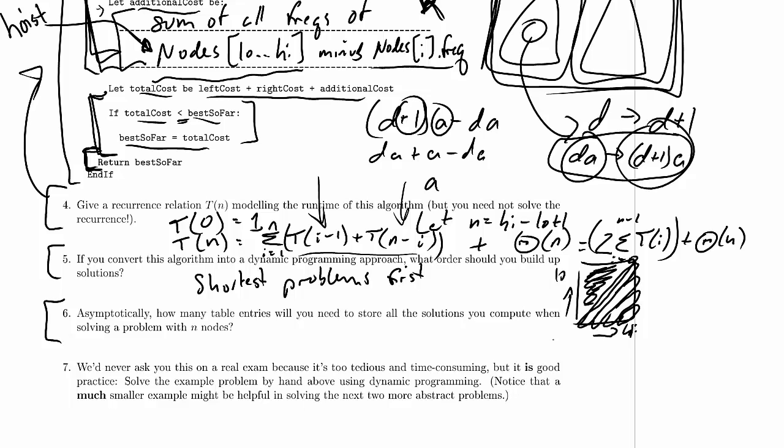We've already sketched out the table in the previous problem and we had two dimensions. We have two parameters, one for low, one for high. Low can vary anywhere from 1 up to n, the number of elements in the array. High can also vary from 1 up to n, the number of elements in the array.